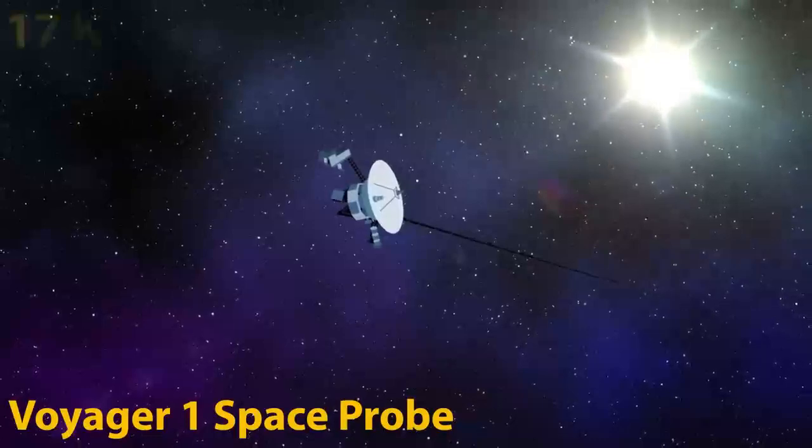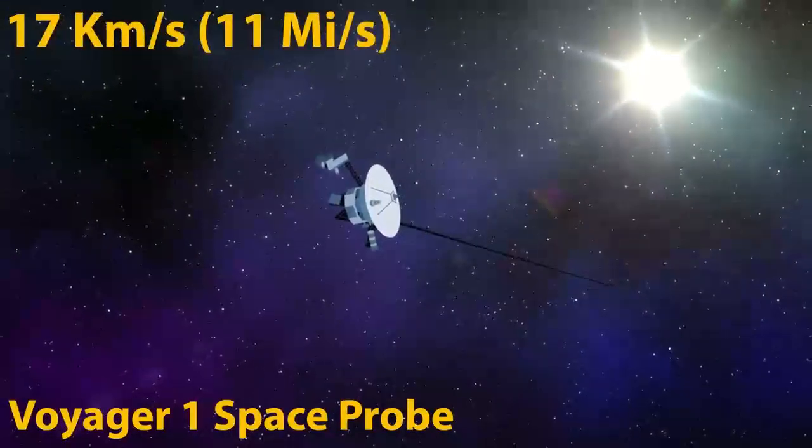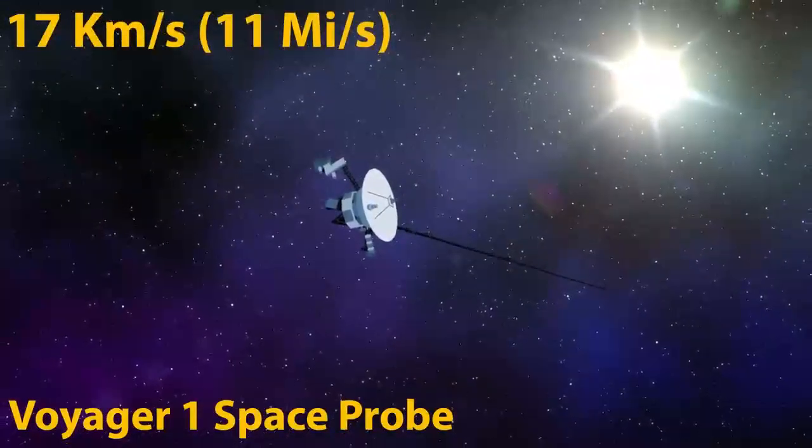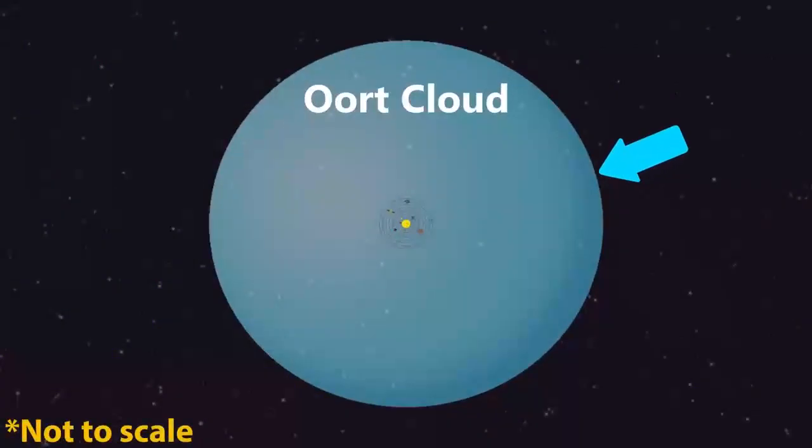Voyager 1 is currently traveling at 17 kilometers every single second, but even at that speed, it won't break out of the reach of our solar system for another 30,000 years.